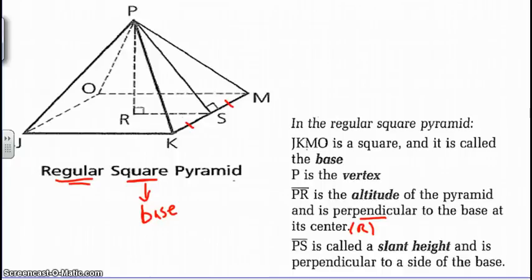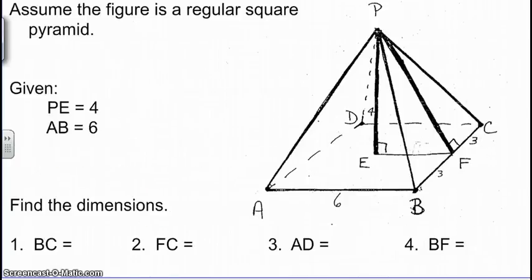So let's take a look at our first example here. So here we have a regular square pyramid. We're given that PE is four. We're also given that AB is six. Therefore, BF and FC, that would be bisected. So those would both be three. We're looking for BC. Again, realizing that this is a square, all the sides are congruent. So those would be six.